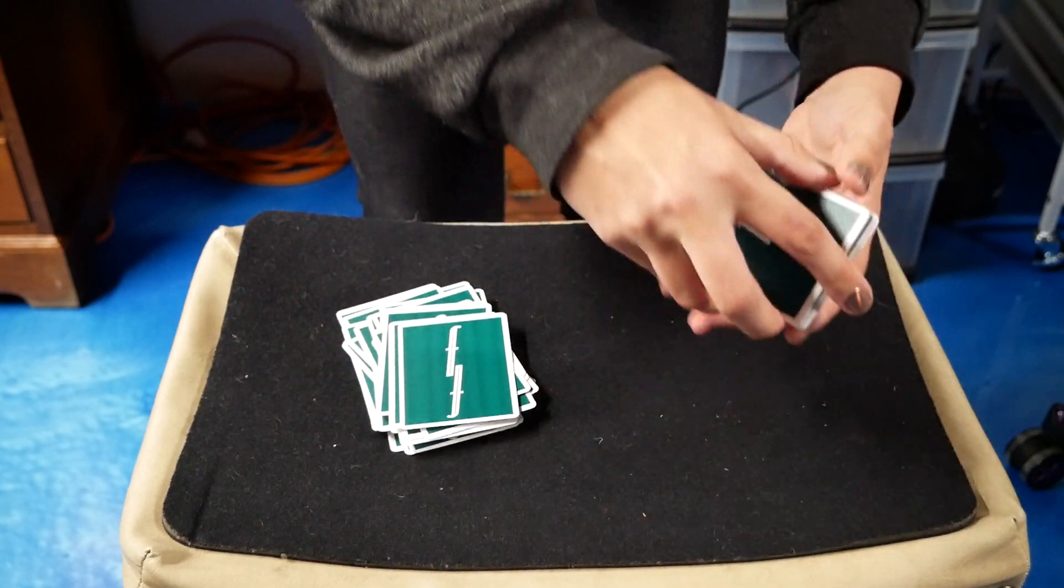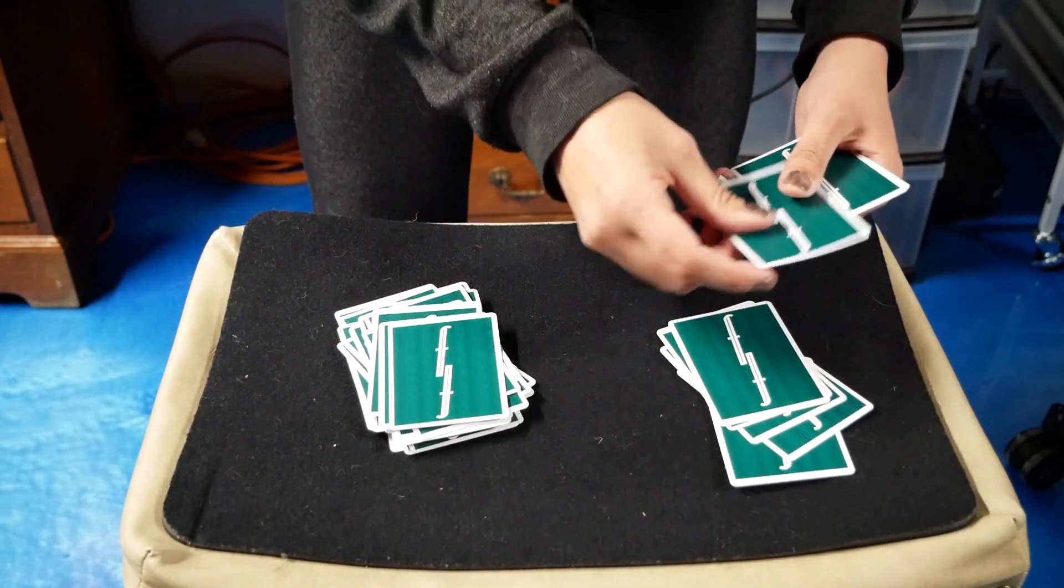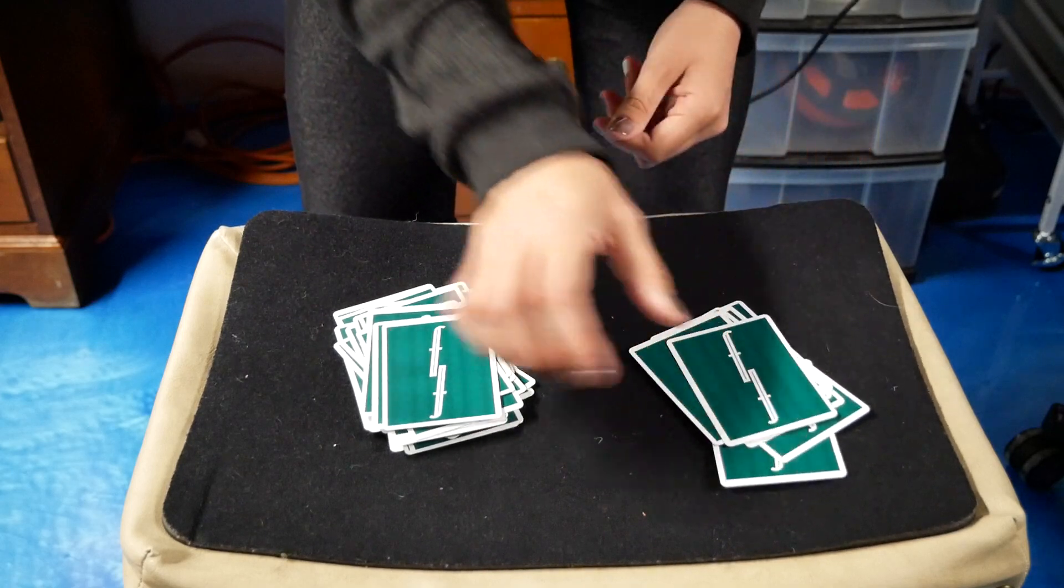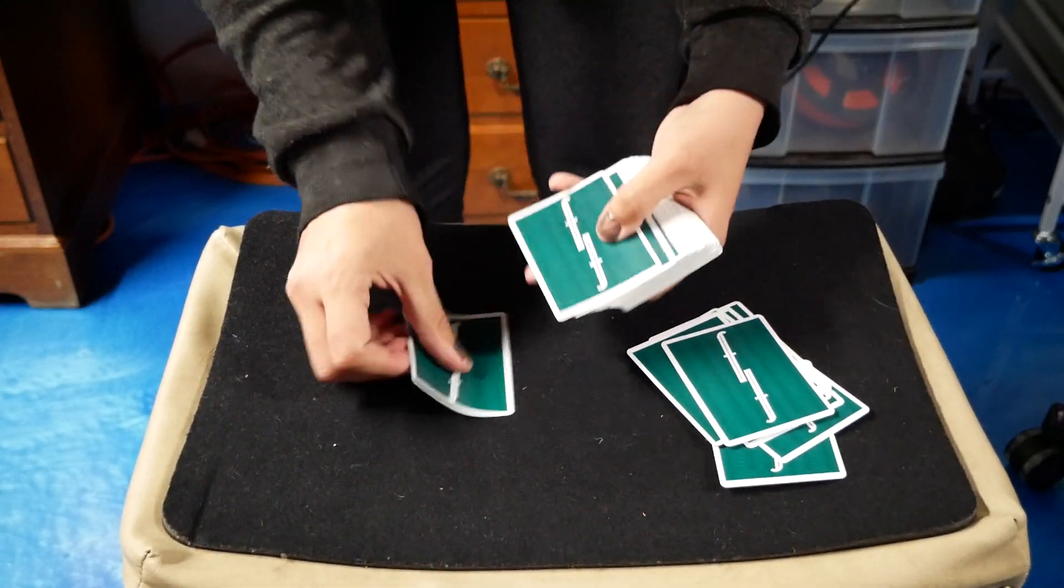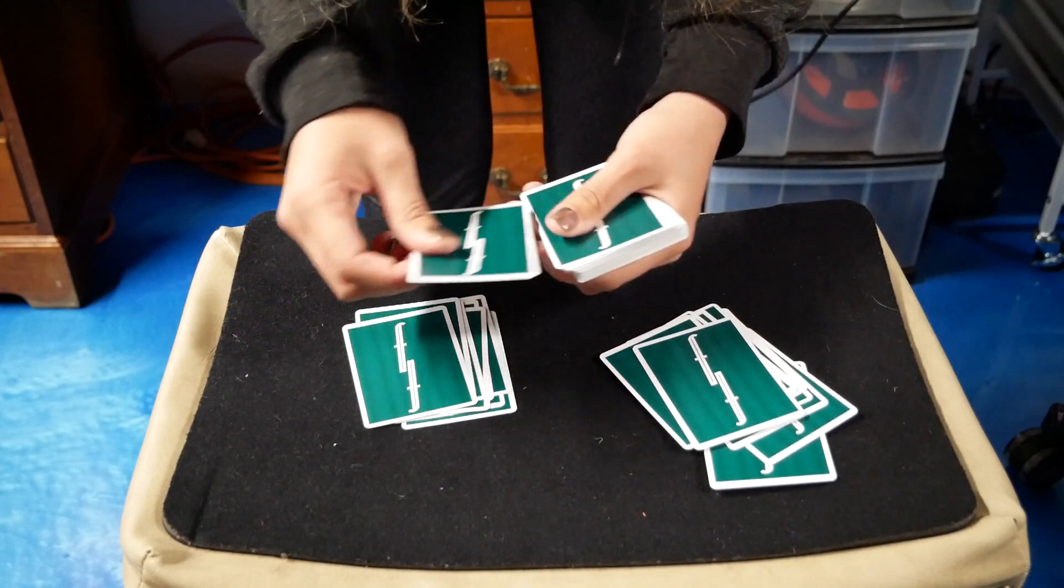So now we're going to take this. We're going to count how many cards are in this pile. One, two, three, four, five, six, seven, eight, nine. Let's see. One, two, three, four, five, six, seven, eight, nine.